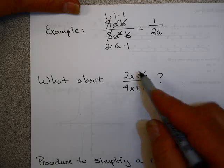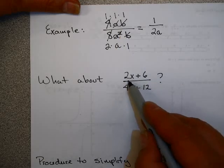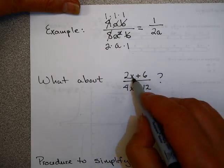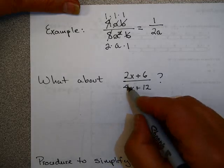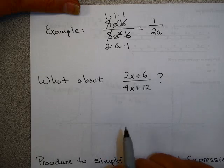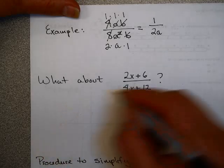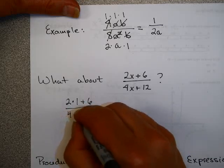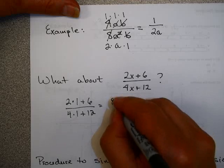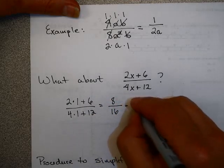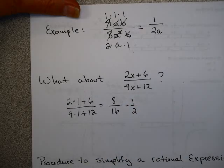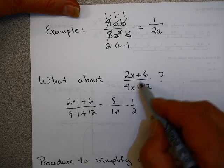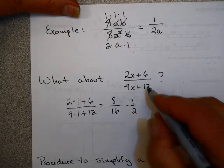What about a problem like (2x+6) over (4x+12)? Notice these pluses mean 2a and 6 are not factors — they're terms. 4x and b are factors, but 2x+6 are not. It is really tempting to cancel the 2 and the 4, but that doesn't work. For example, if x equals 1, we get 2 times 1 plus 6 over 4 times 1 plus 12, which is 8 over 16, or 1 half. But if you cancel the 2 and 4 incorrectly, you'd get x plus 6 over 2x plus 12, and plugging in 1 gives a different answer.